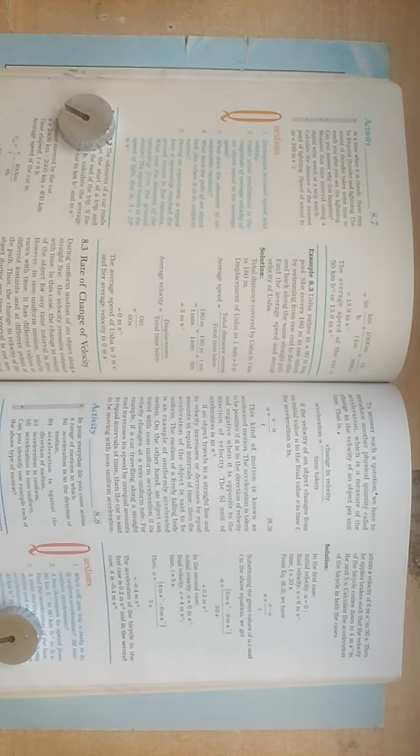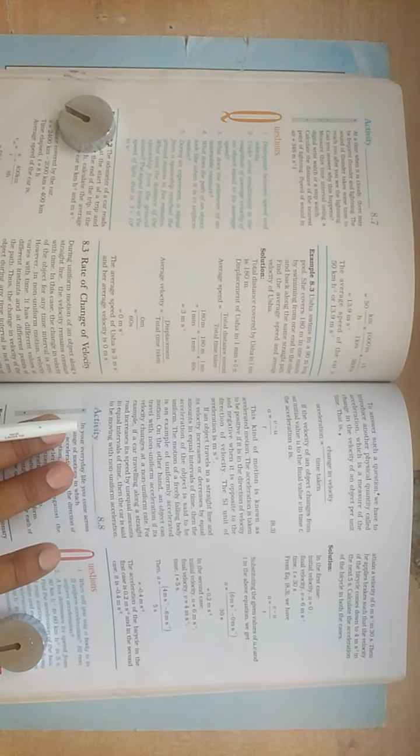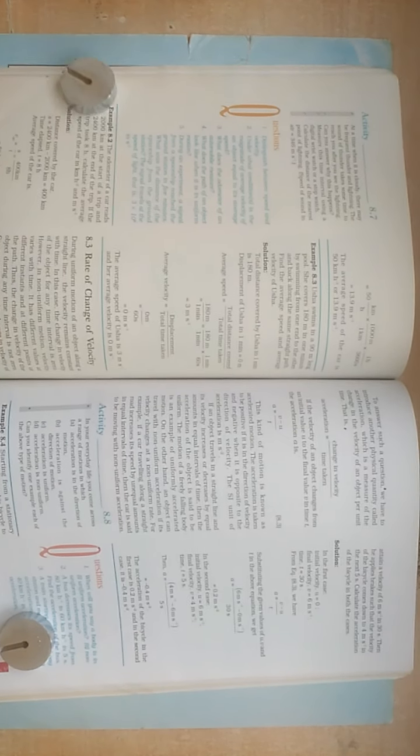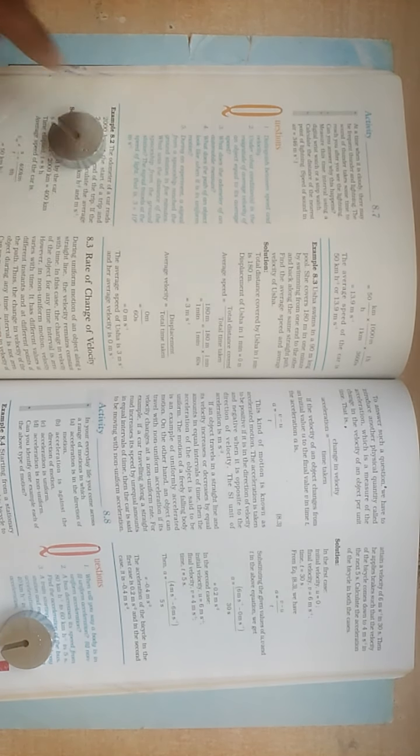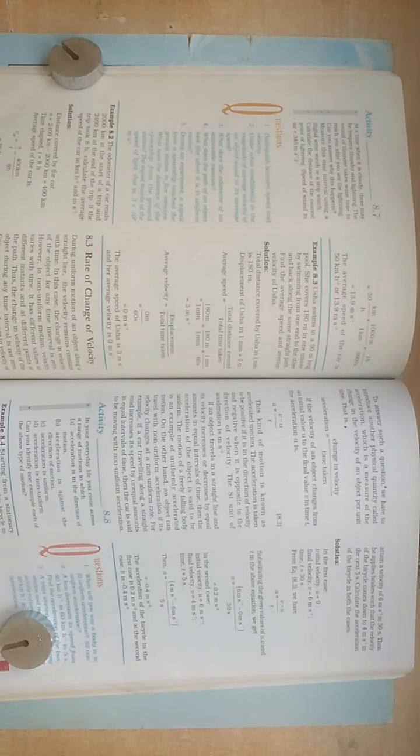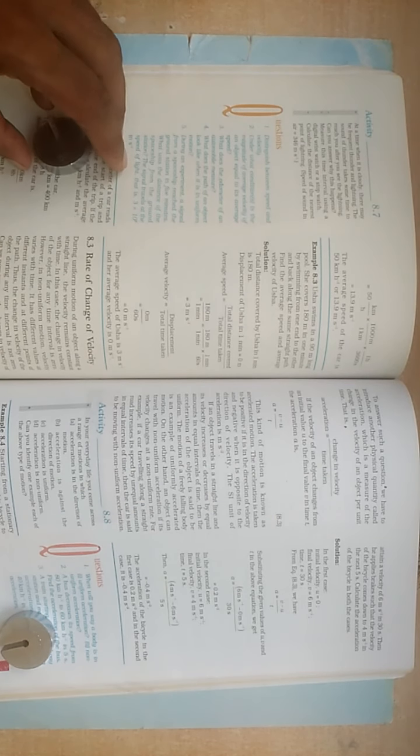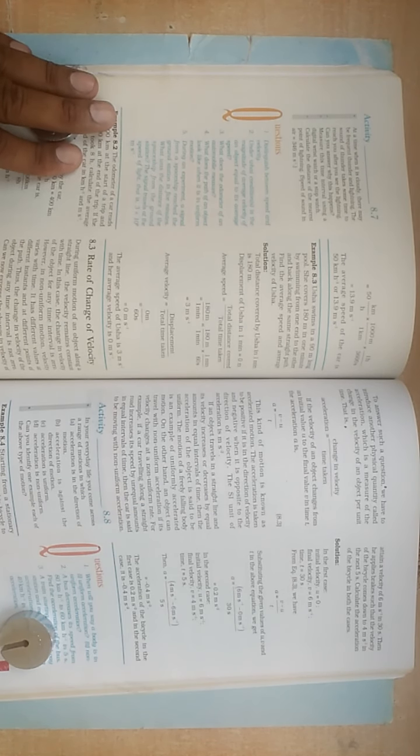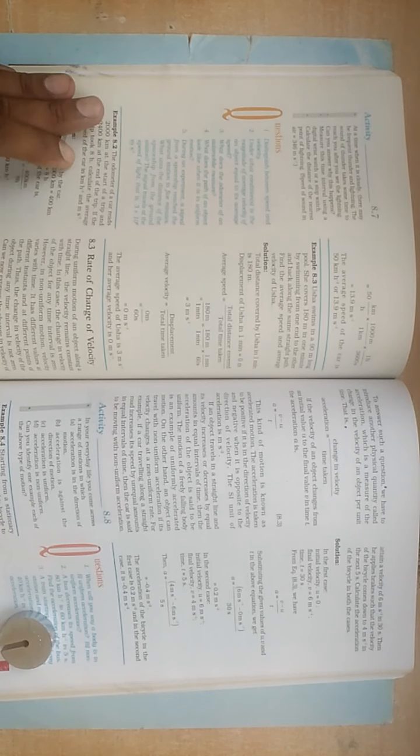Now the SI unit - SI means System International - the SI unit of acceleration is meter per second square. Now if an object travels in a straight line and its velocity increases or decreases by equal amounts in equal intervals of time...